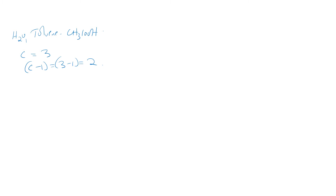For P phases, the total number of concentration variables will be the product of P multiplied by C minus one, plus 2. The 2 stands for the variables that are always present in the system — temperature and pressure. This gives us the total number of variables for the system.